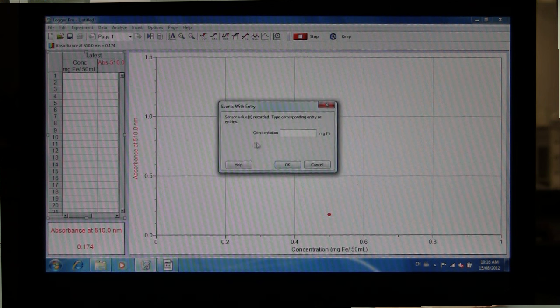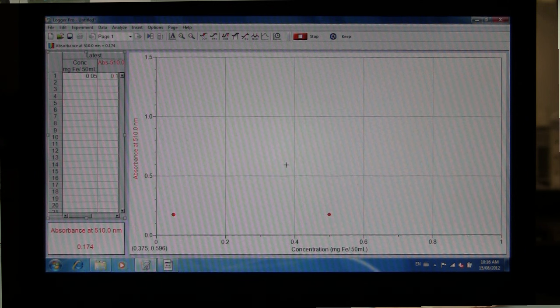A window will pop up prompting you to enter your concentration value. This one is our 0.05 milligram of iron sample. We'll click OK and then the point will show up on the graph and also be recorded in the table.